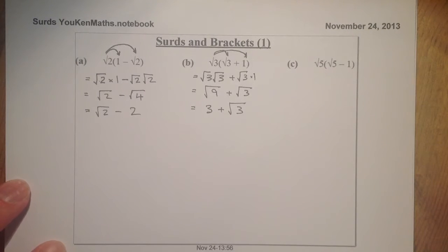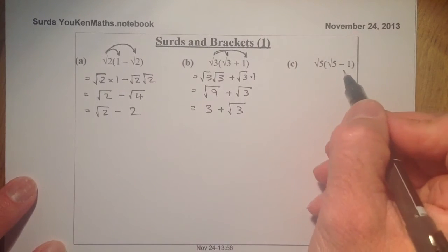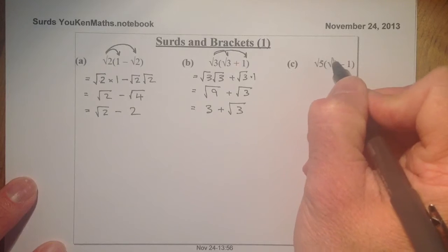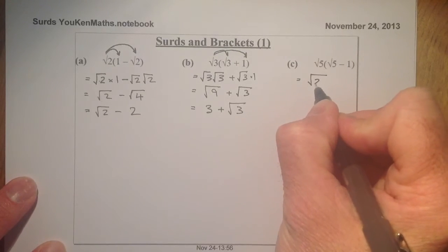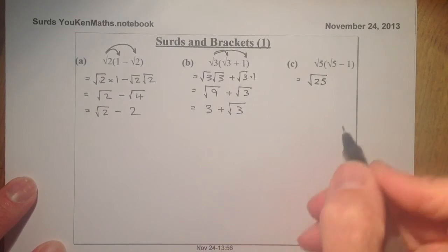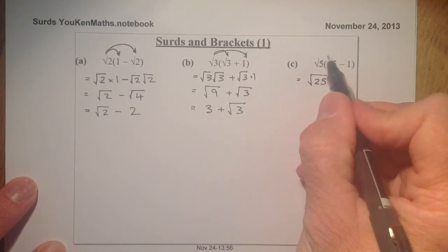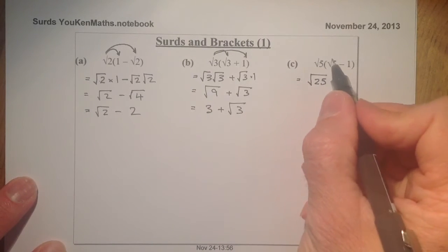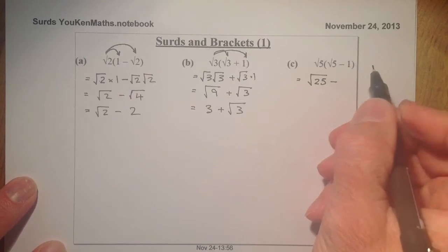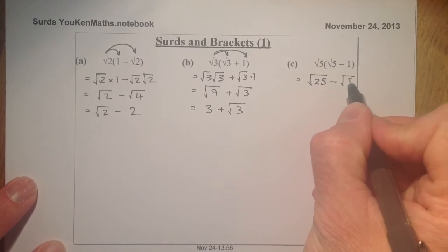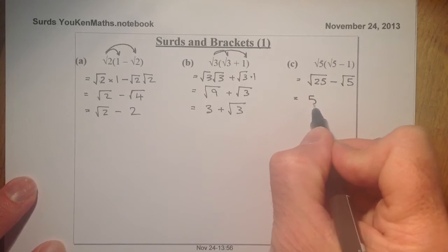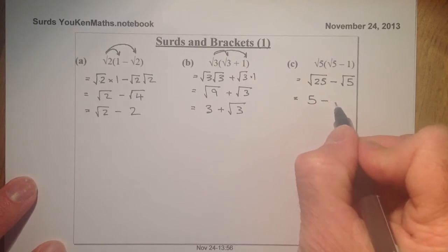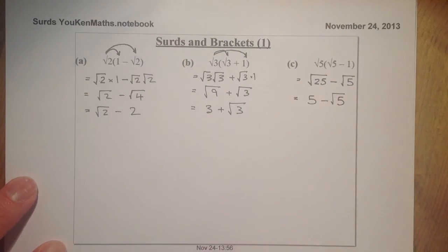For root 5 times (root 5 minus 1): multiplying out the first terms I'll go straight to saying that's root 25. Multiplying out the last term, that's root 5 times minus 1, which gives me minus root 5. Simplifying root 25 — that's a square number — gives me 5, so the answer is 5 minus root 5. That's my answer for that one.